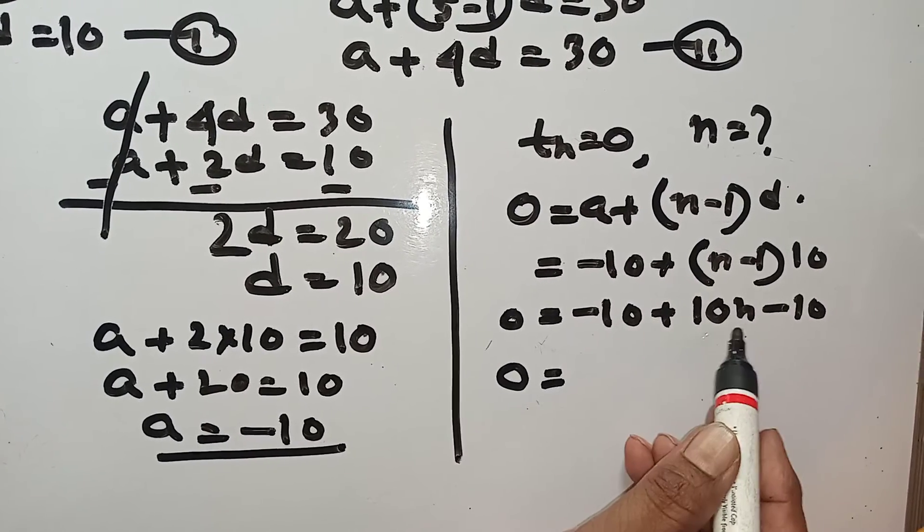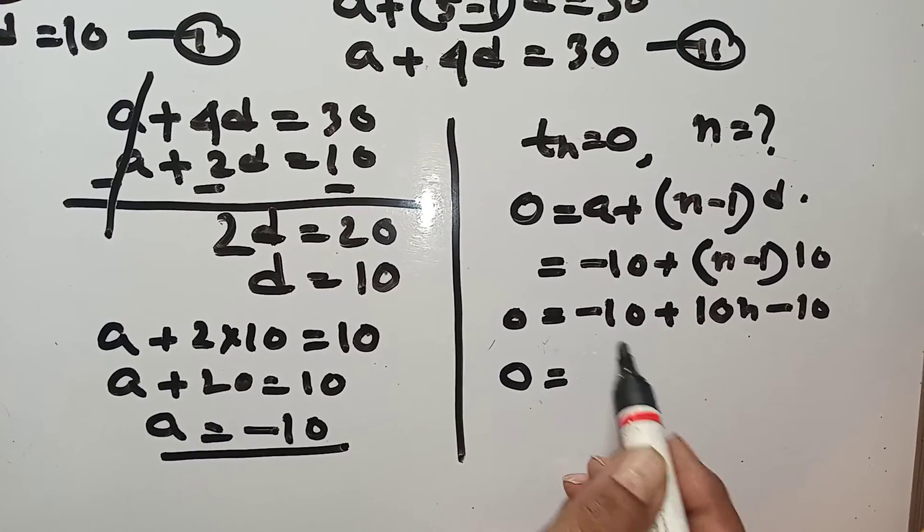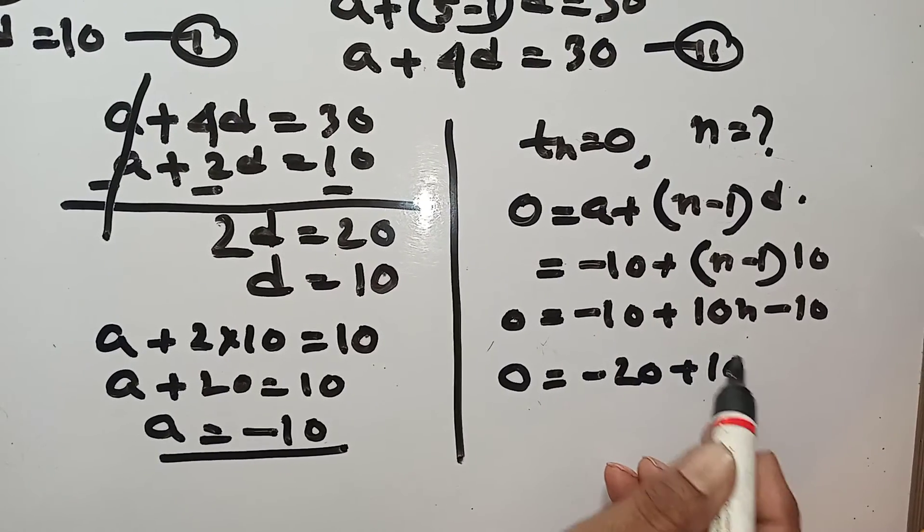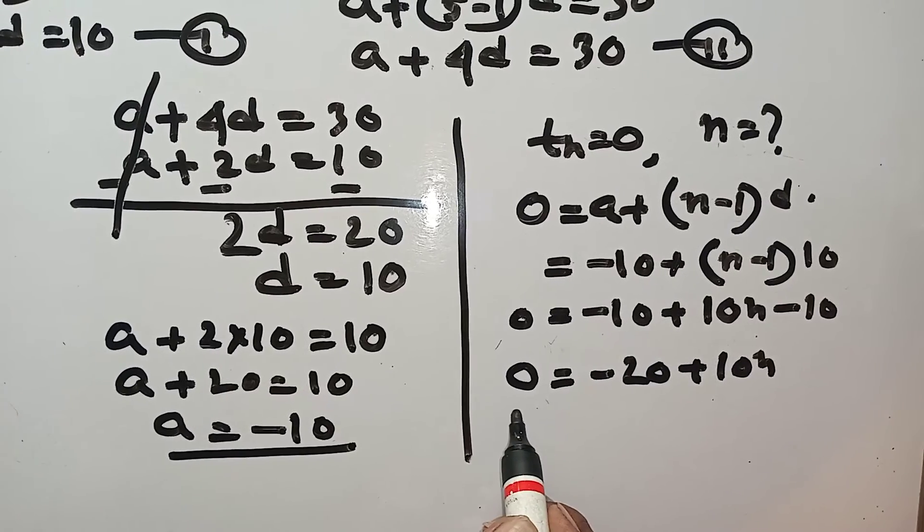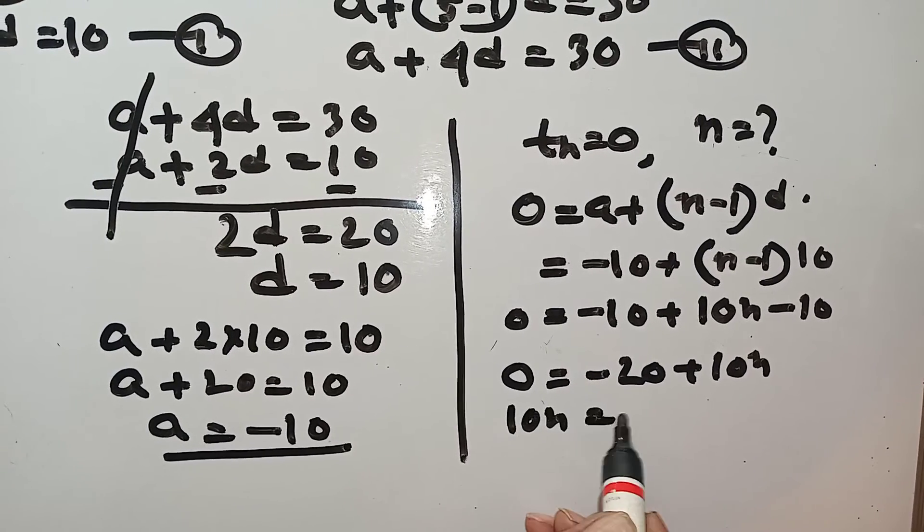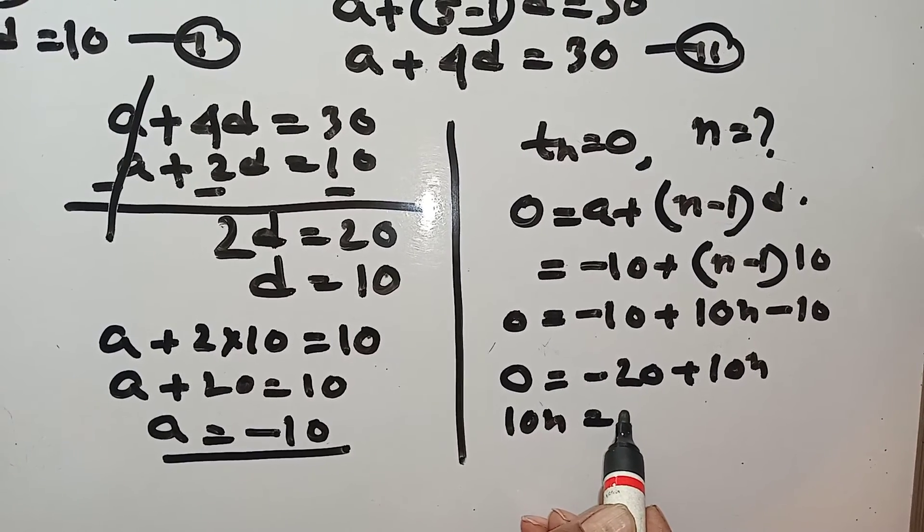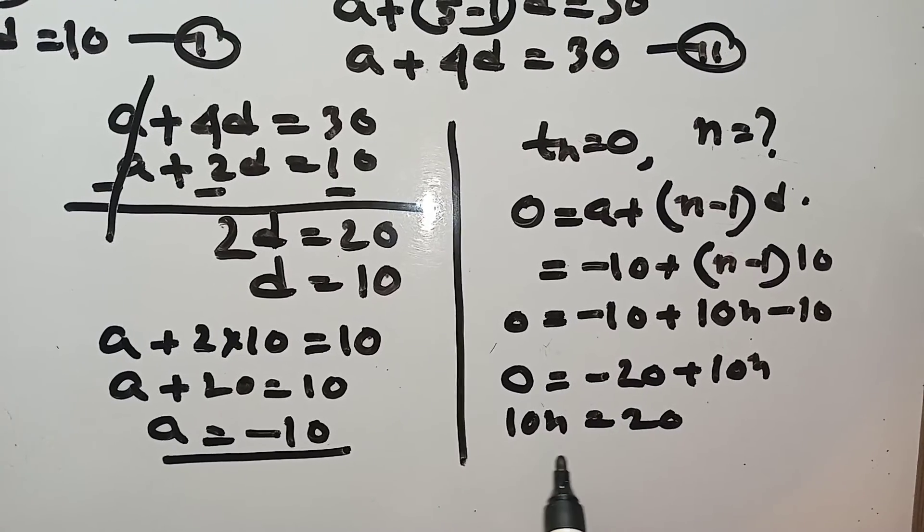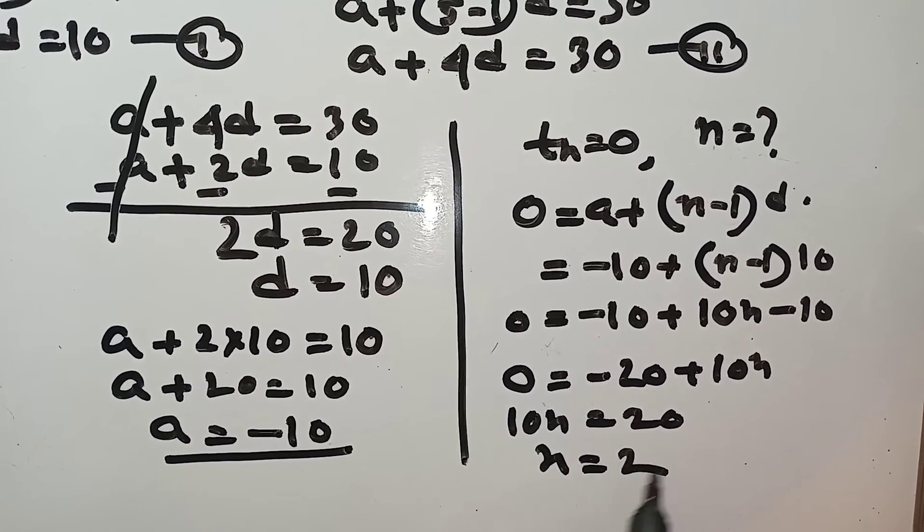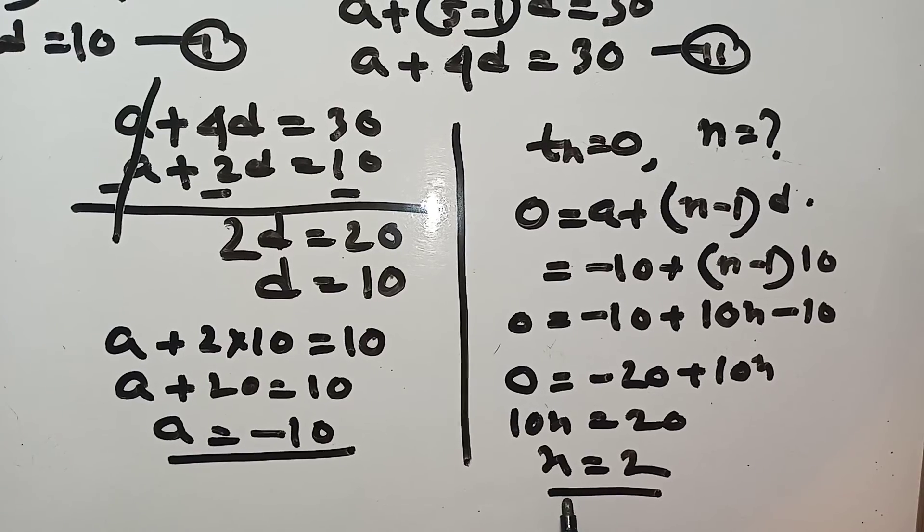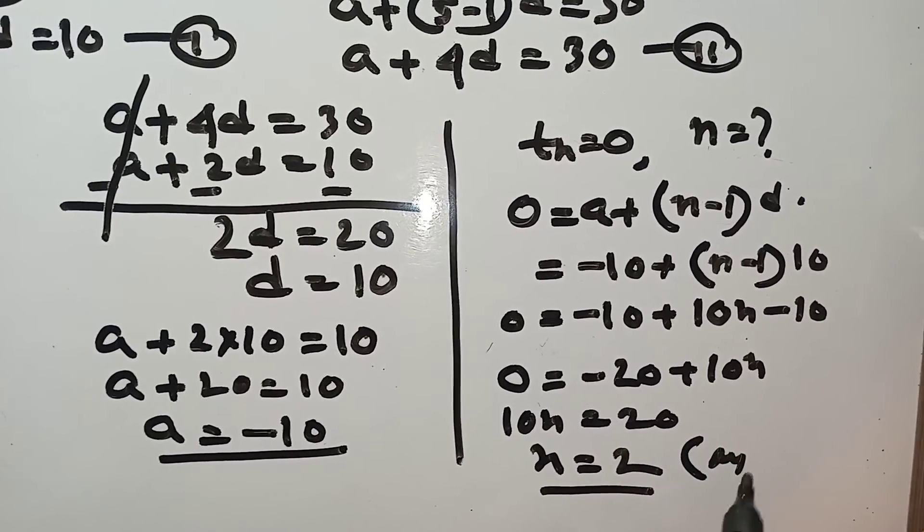Now here is minus 20 plus 10N. 10N equal to 20, N equal to 2. That means second term becomes 0. This is the answer.